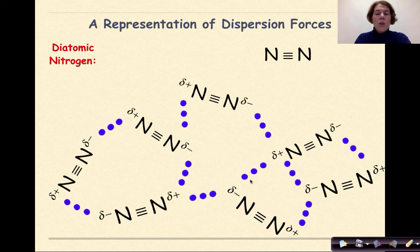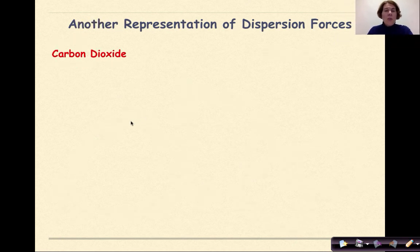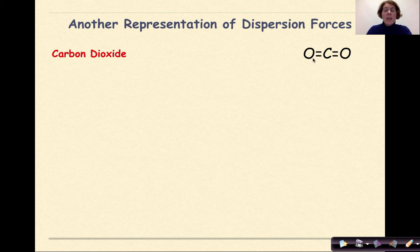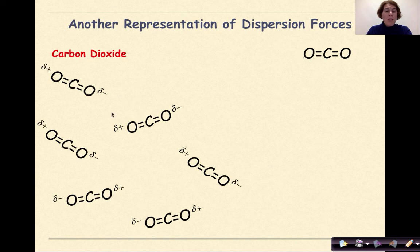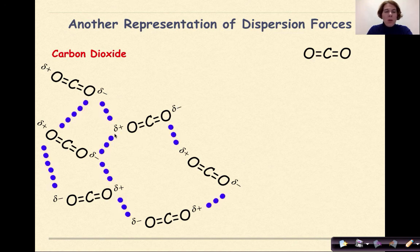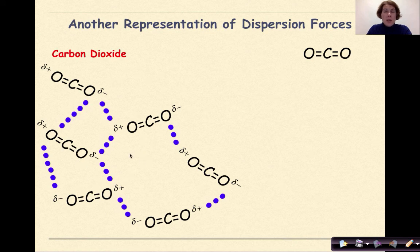Let's look at another representation using carbon dioxide. CO₂ has a carbon in the center with an oxygen on each side connected by two double bonds. The shared electrons between oxygen and carbon are dynamic, not static. At any point in time, all the electrons might be pushed closer to one oxygen, then pulsate back to the other. When many CO₂ molecules are next to each other, one end might be slightly positive and the other slightly negative. The dots between molecules show weak forces of attraction between one end of one CO₂ molecule and one end of another.